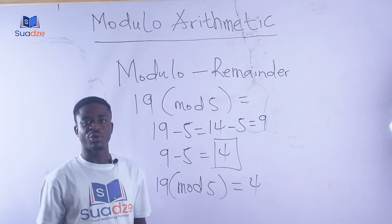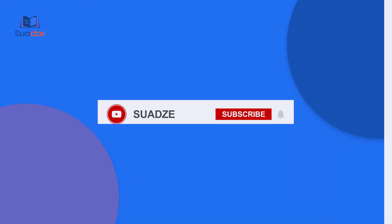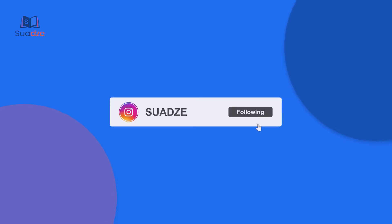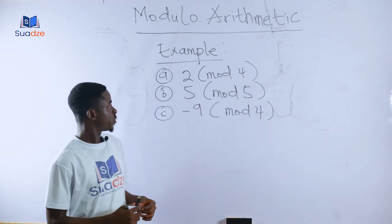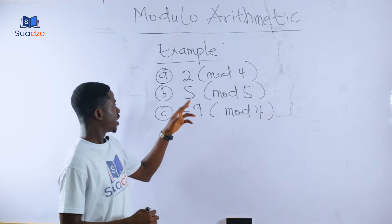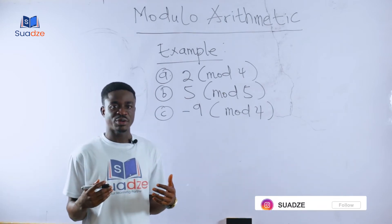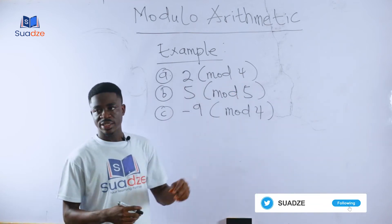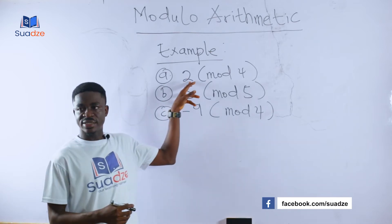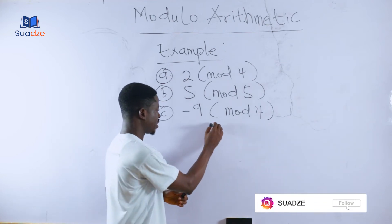Let's take more examples to help you get a better understanding of modulo arithmetic. We will find 2 modulo 4. Notice that in the earlier examples the integer was bigger than the modulo number — we call the first number the integer and the second the modulo number.